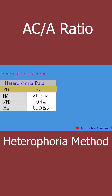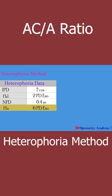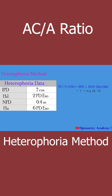Near phoria (Hn) is 6 prism diopters esophoria and distance phoria (Hd) is 2 prism diopters esophoria. Putting these values into the given formula, the AC/A ratio in this example is 8.6 to 1.